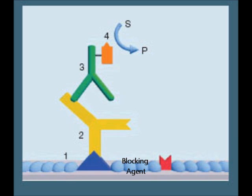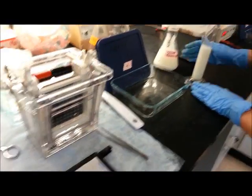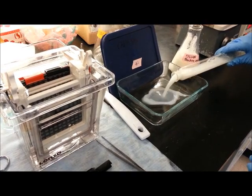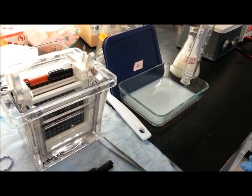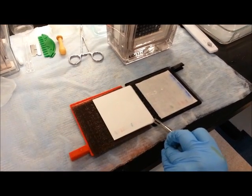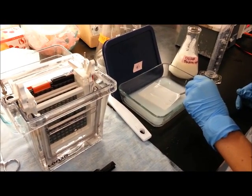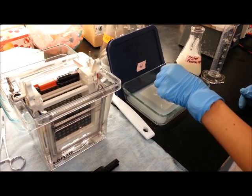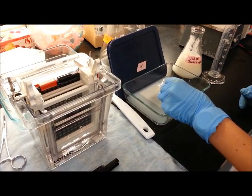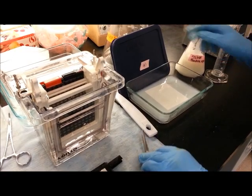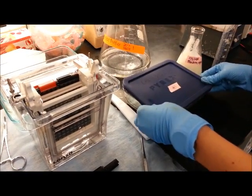Blocking the unoccupied binding sites with nonspecific protein reduces the background noise of the western blot. The blocking solution is made of a 5% dry milk solution in TBS. The light blue circles represent the blocking agent. With tweezers, place the nitrocellulose into a tray containing the blocking solution. Cover the tray and place it in the fridge overnight.